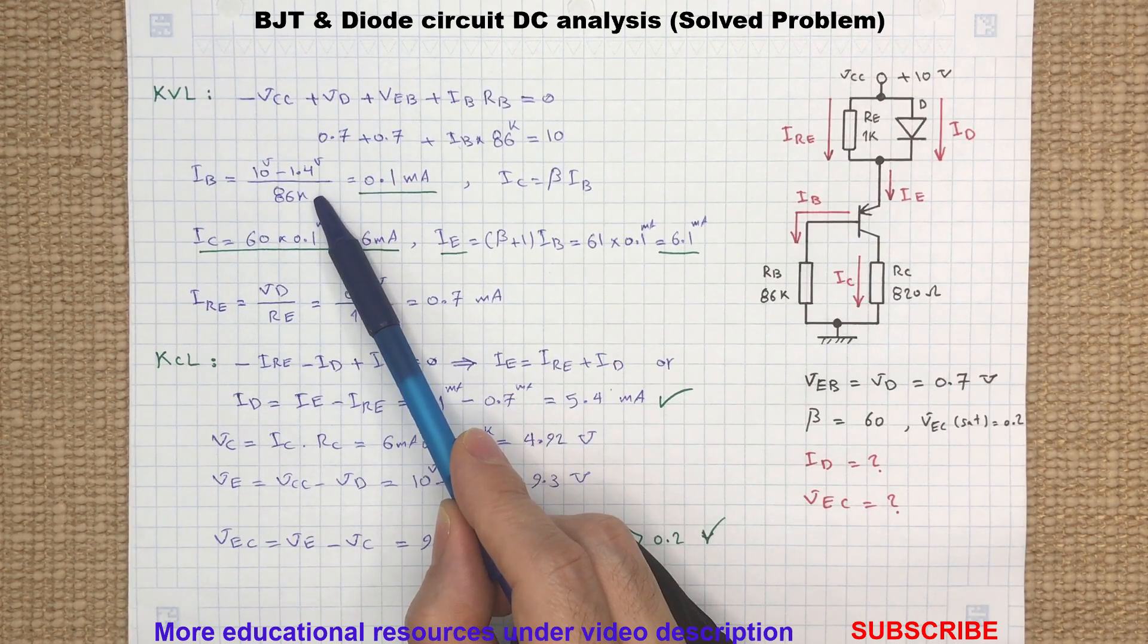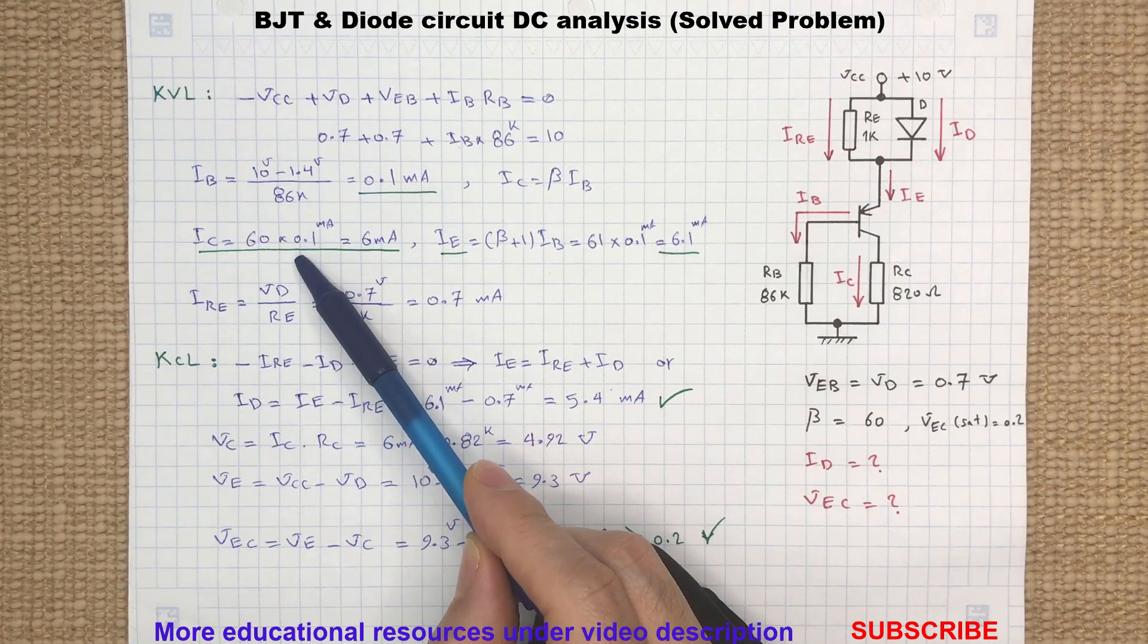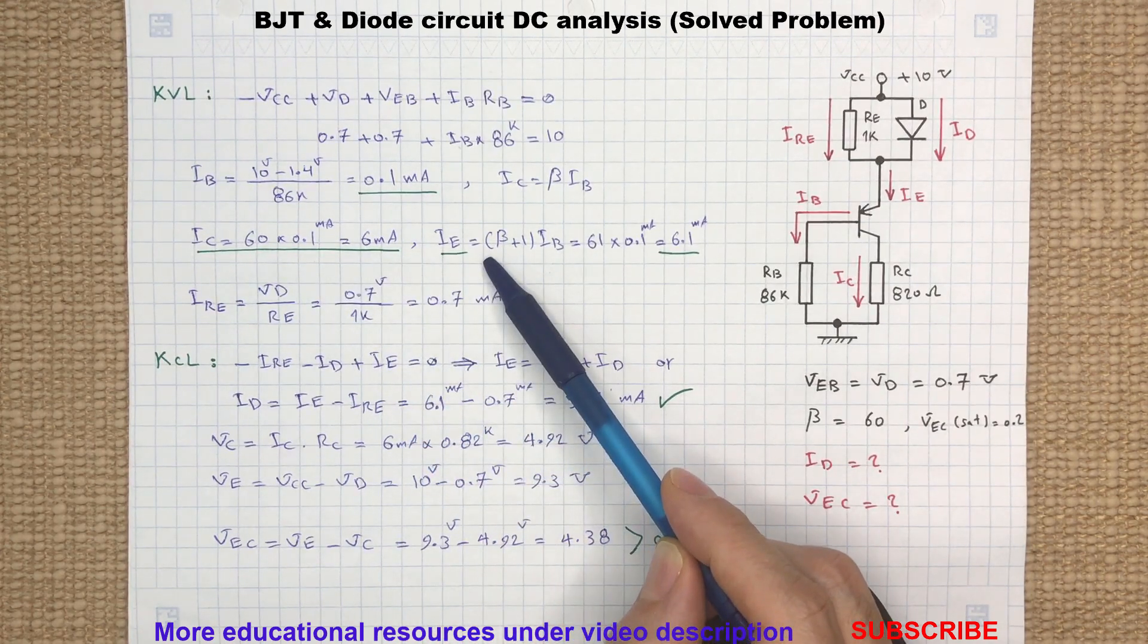Solving the KVL equation will give us the base current value. With knowing the base current IB, we can calculate the collector and emitter currents.